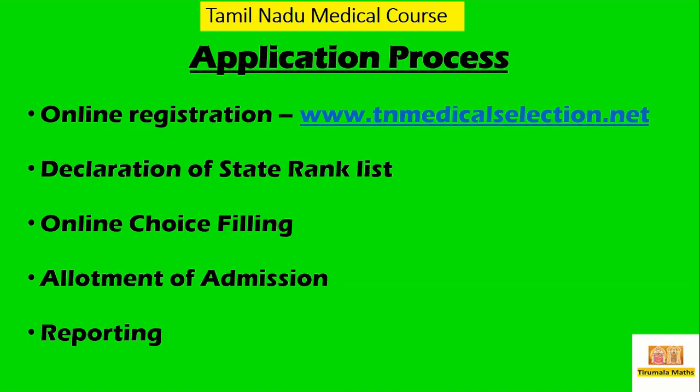Next is the application process. First, you have to go for online registration. After registration, the next step is declaration of the state rank list — authorities will release the state rank list. Then comes online choice filling, where you select which college and course you prefer. After that, the next process is allotment of admission. They will give a specified date on which you have to go and report to finalize the admission process. This is how MBBS and BDS admissions are processed. Please make note of all this — it will be very helpful for students who have already completed 12th standard.